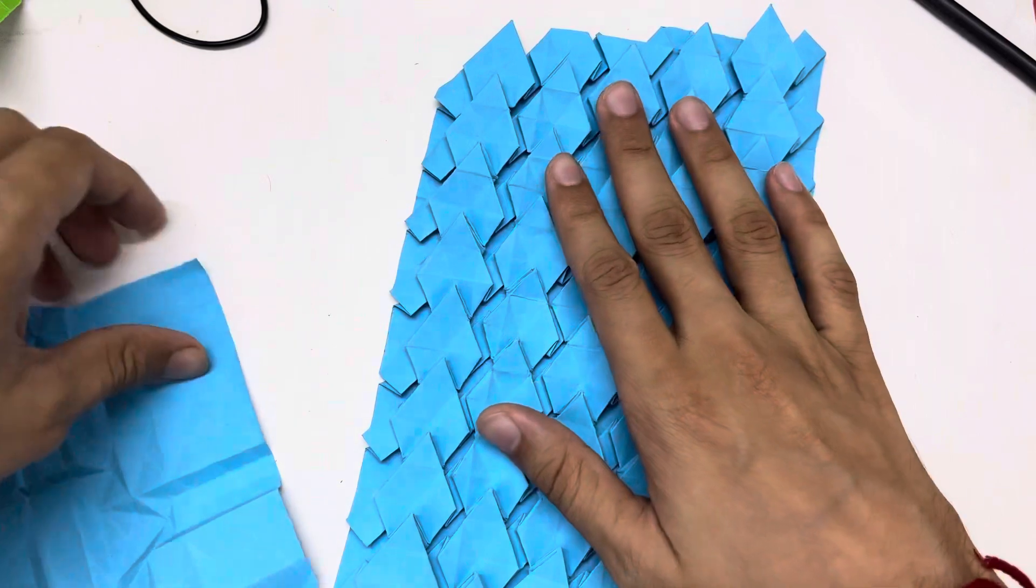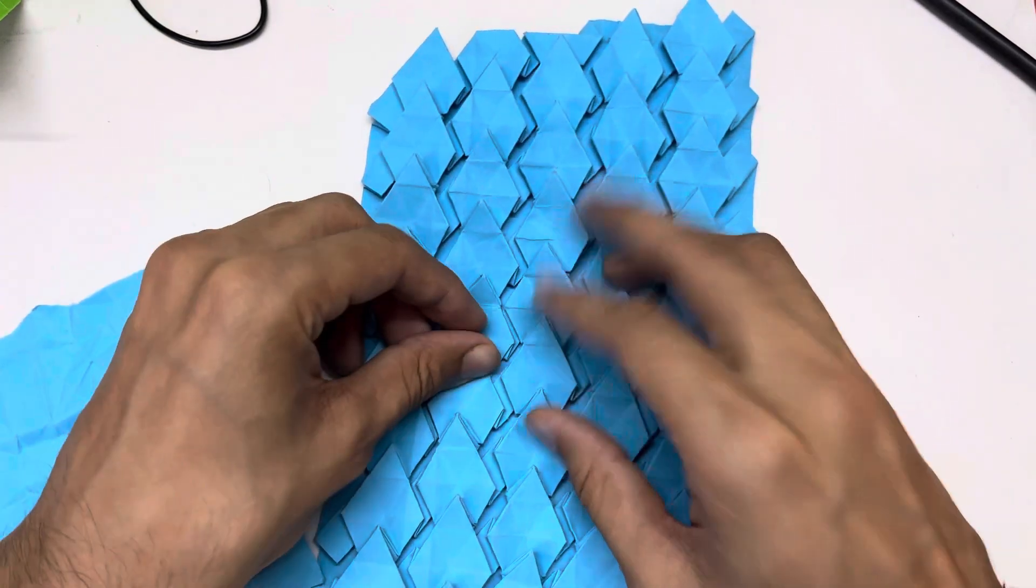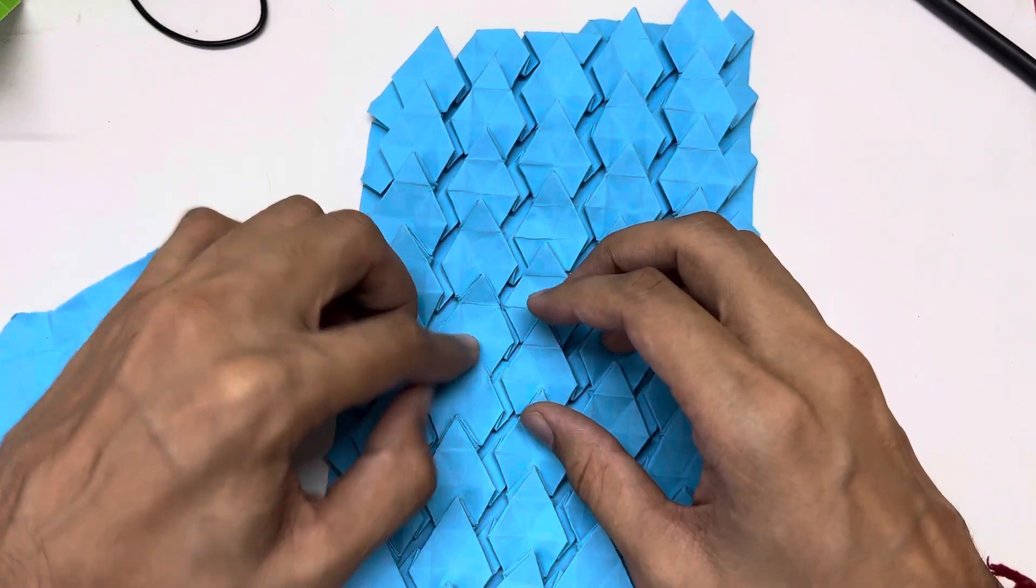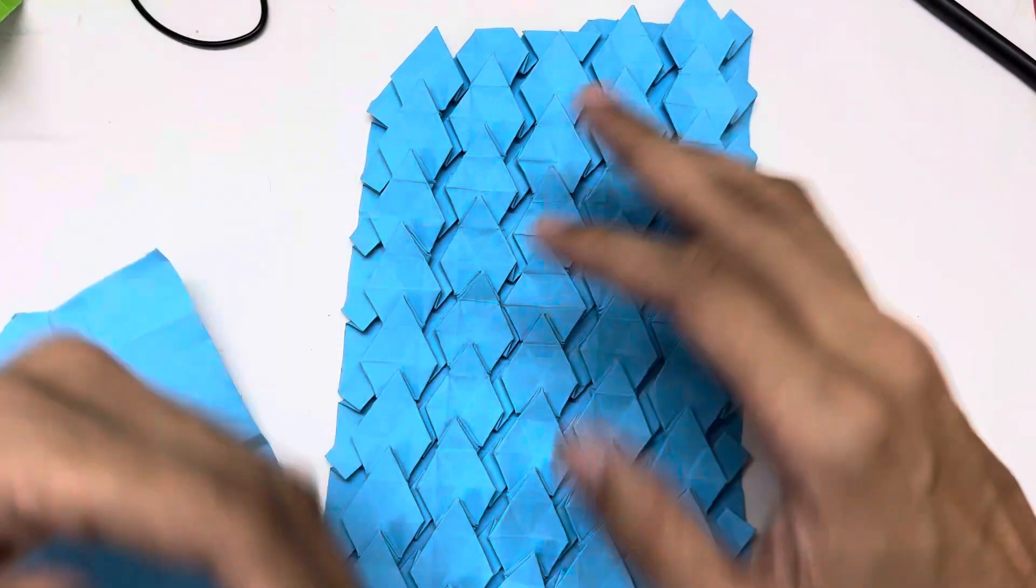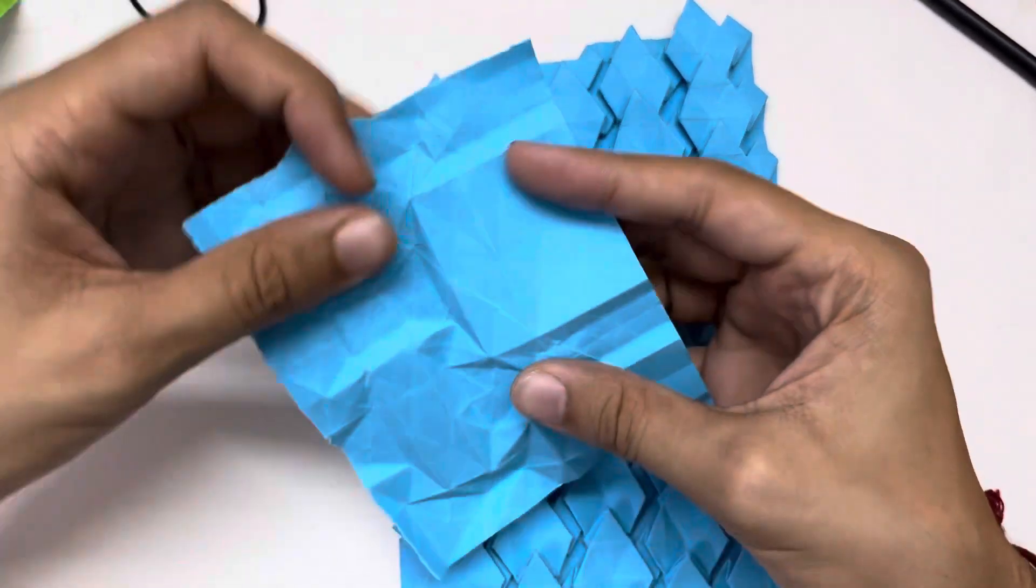To fold this we essentially need to learn two things: this rabbit ear fold and one pleat. As you can see, the whole thing is just a repetition of that. So I'm going to show you on a small sheet of paper what to do.